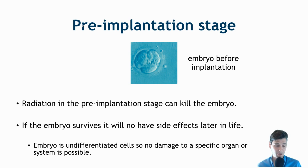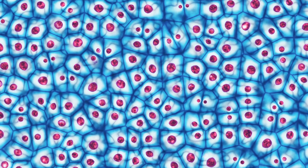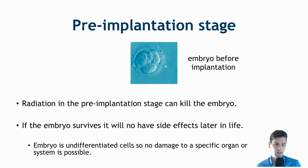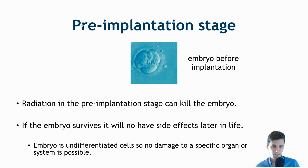In the pre-implantation stage, because there is no differentiation of the cells, there can't be specific damage to, for instance, the head or a given organ. So if radiation damage does occur, it will be either death or there will be no damage at all — you cannot have potential specific side effects this early when you have an embryo.